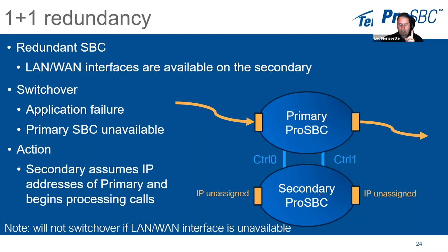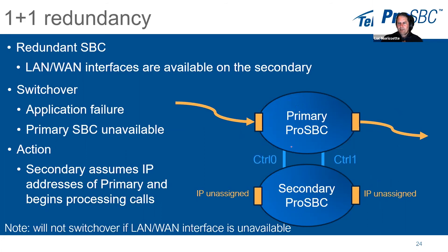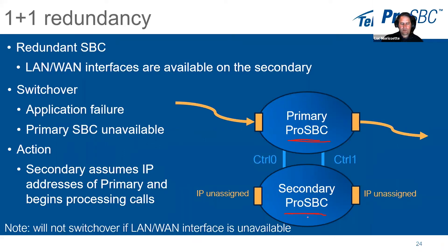Regarding licensing for 1+1 redundancy: when you purchase a Pro SBC license, you can also request a secondary 1+1 license, which is included in the price of the primary. You receive two different product keys, but there is no additional cost for the secondary system.